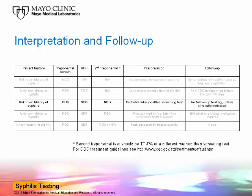In the third scenario, a patient with no history or unknown history of syphilis tests positive by the screening treponemal assay, but reflex testing by RPR is reported as negative. In this situation, a second treponemal test is performed on the same serum sample and is reported as negative. These results would be consistent with a false positive screening test, and no further testing is required unless clinically indicated.